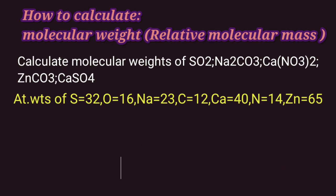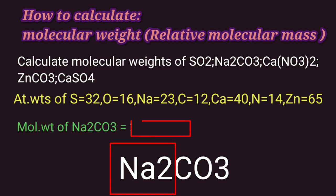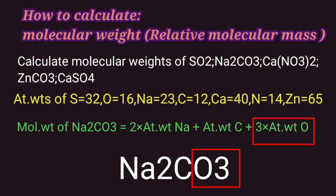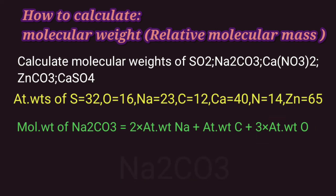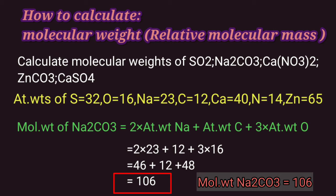Let us now find molecular weight of sodium carbonate. Molecular weight of sodium carbonate is 2 into atomic weight of sodium, plus atomic weight of 1 carbon atom, plus 3 into atomic weight of oxygen, as there are 3 atoms of oxygen. We have 2 into 23 plus 12 plus 3 into 16, which comes to 106. So molecular weight of sodium carbonate is 106.